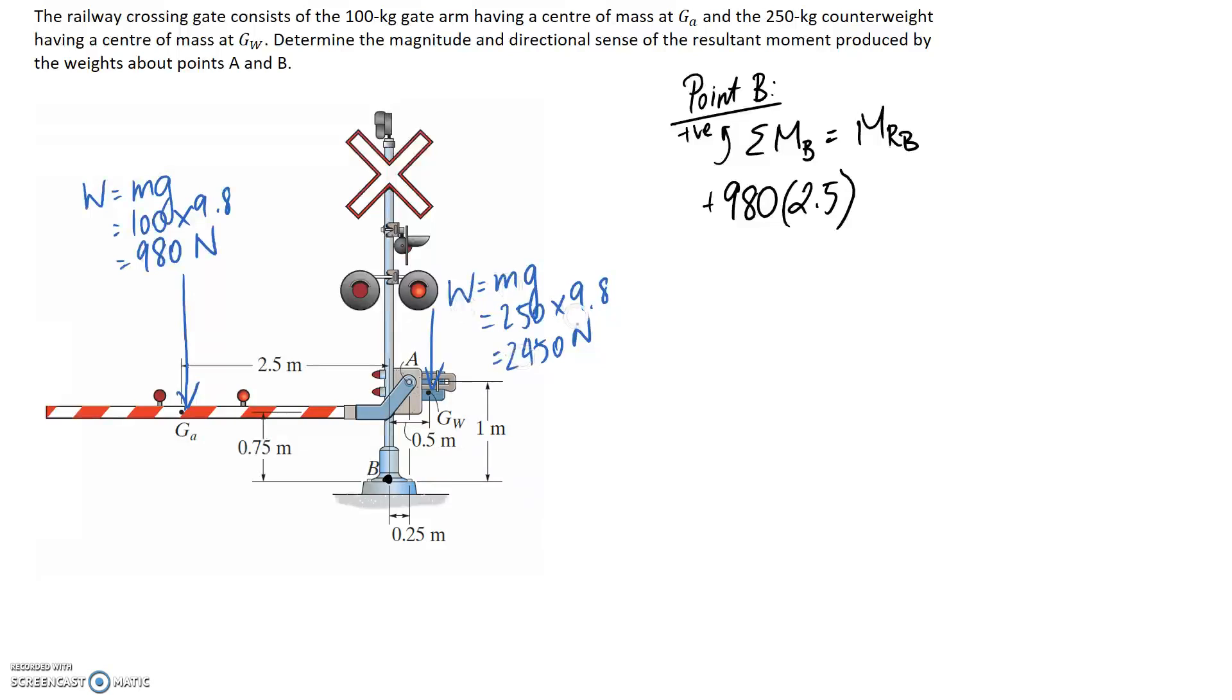So now we need to look at this other force. It's going to be 2450. We need to multiply it by the distance back to B, which is going to be this distance in here, which is 0.5 metres from the diagram. We need to think about the direction it's going to push about point B. This one is going to try and push our structure clockwise, so it's going to go in as a negative.